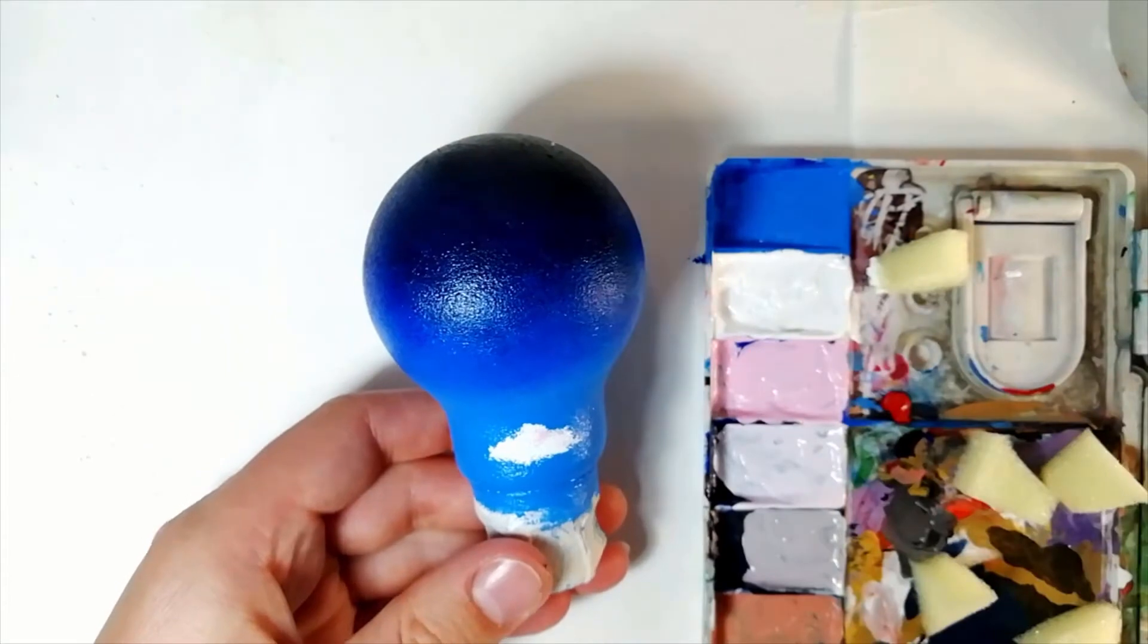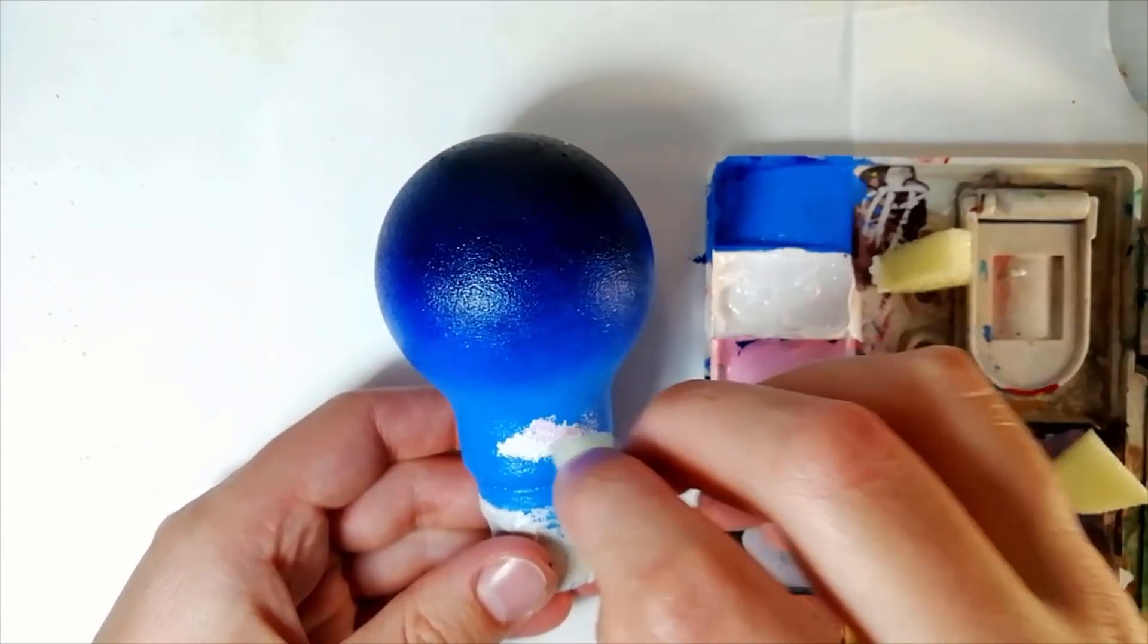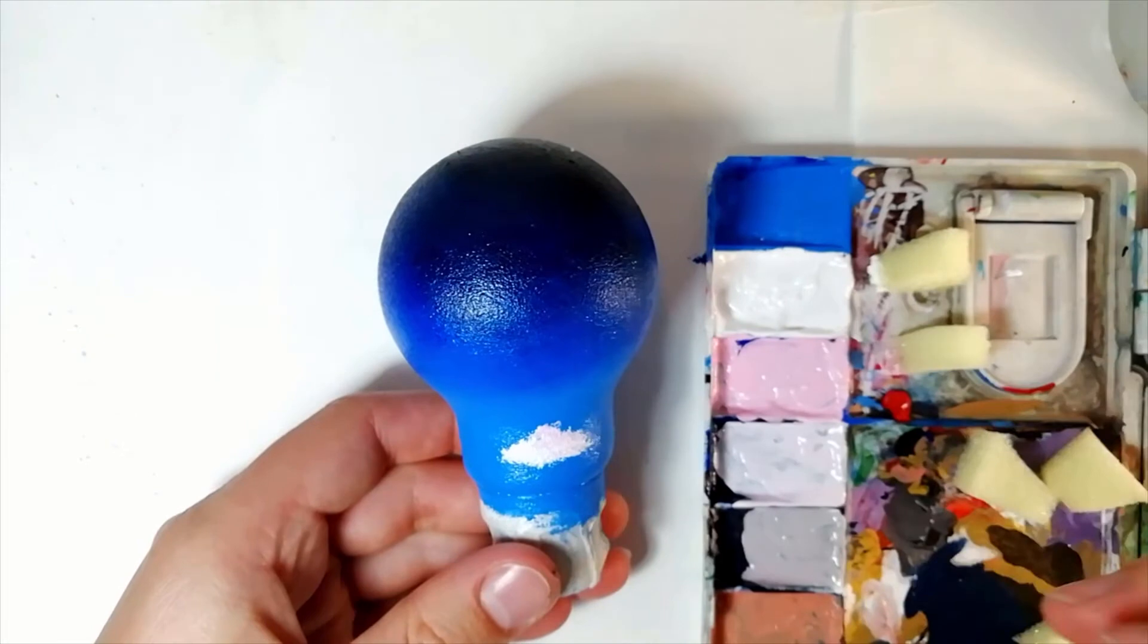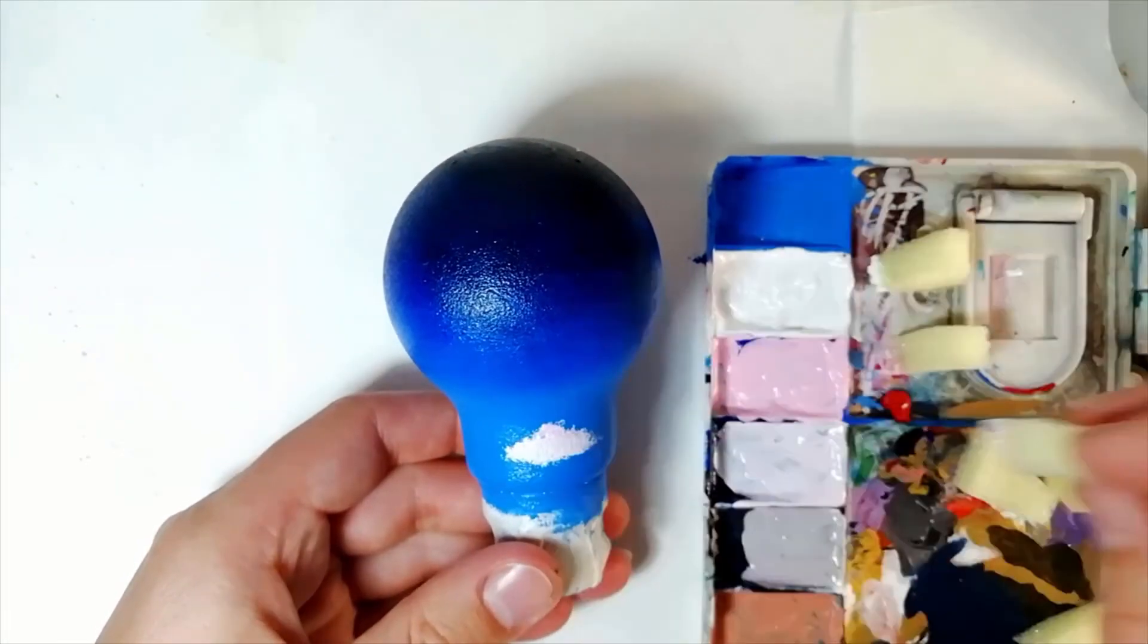I used a combination of pink, light pink, and white to create the clouds, which I decided to have around just the bottom half of the light bulb.